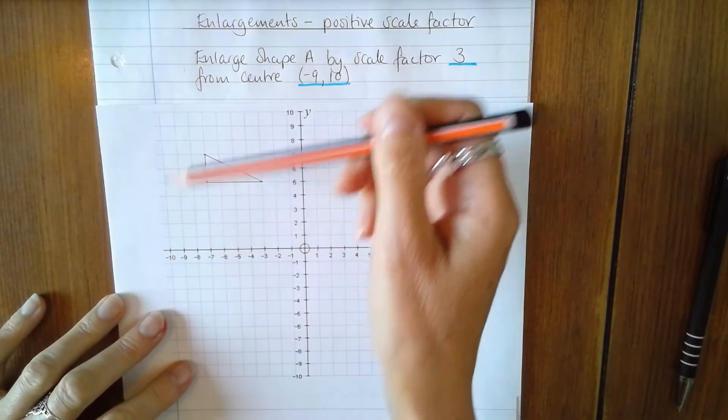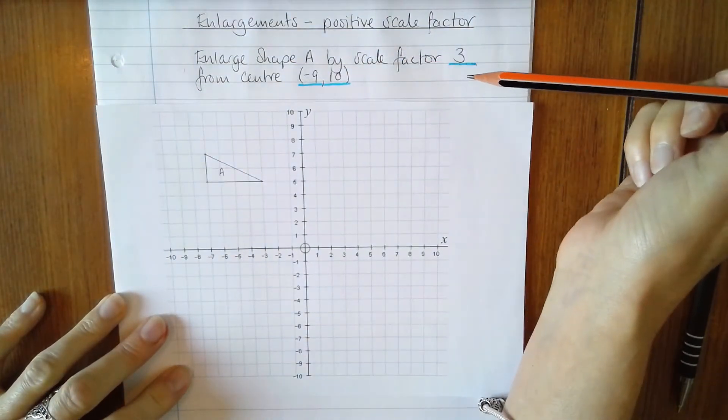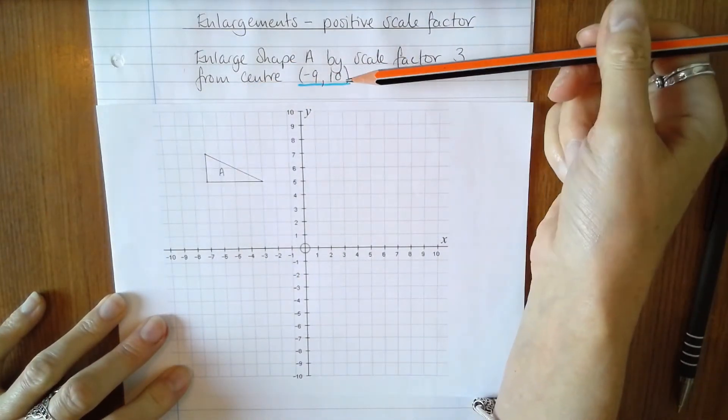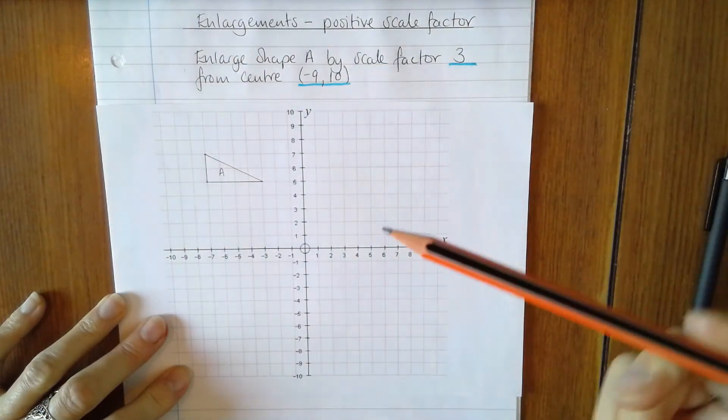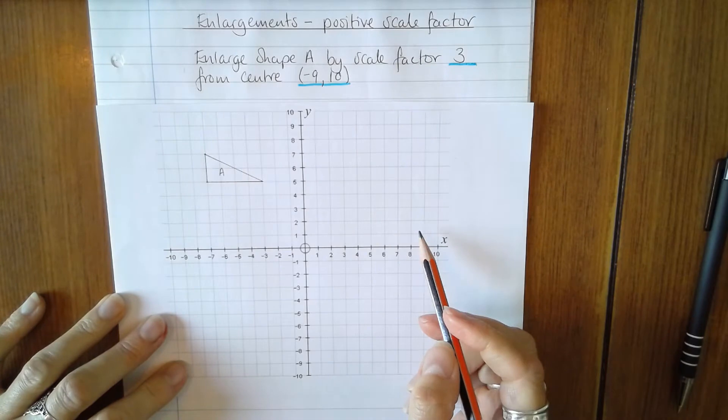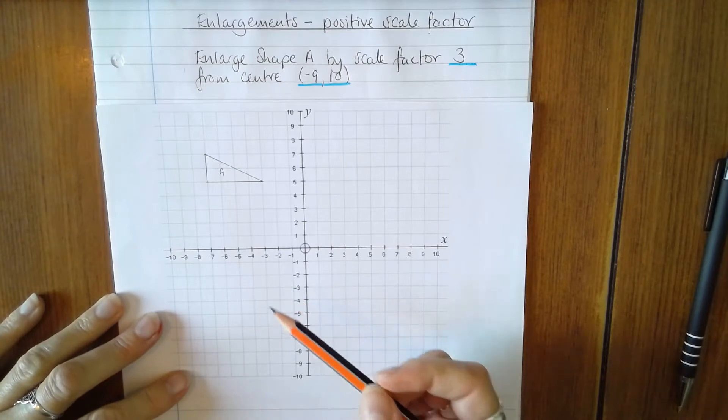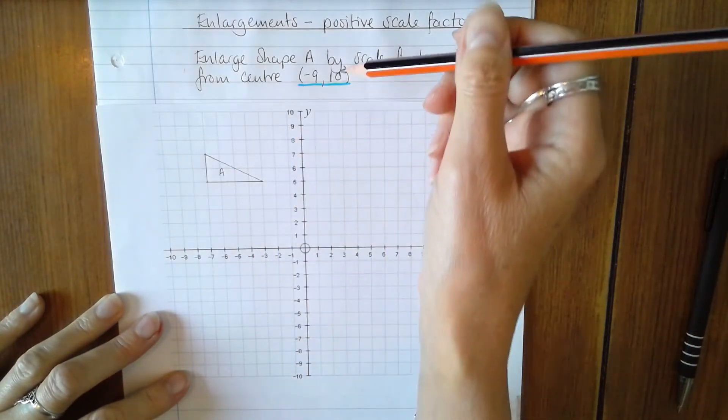In this question we're asked to enlarge shape A by scale factor 3 from center negative 9, 10. If you would like to do the question alongside me, just click the link below to download the templates and print them, and then you can pause the video when you need to catch up.